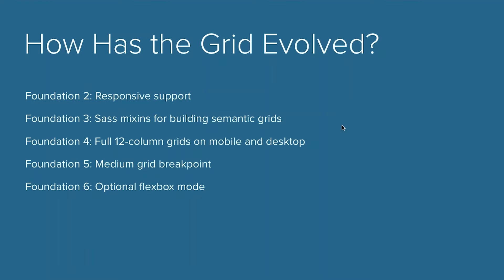Foundation 4 added full 12-column grids on mobile and desktop — a pretty big update. Foundation 5 added the medium grid breakpoint, which was likely in response to the prevalence of tablet-sized devices, giving a lot more power to adjust how content looks. In our studios work, we QA on basically every major device supporting every major browser two versions back — without that medium grid breakpoint, we'd be struggling.